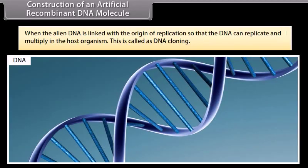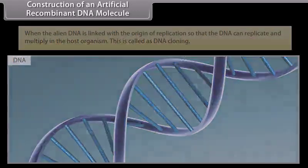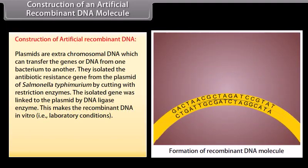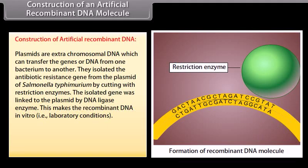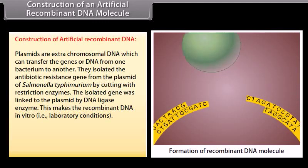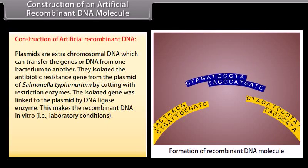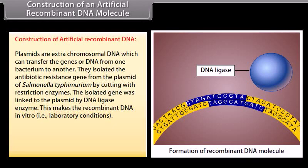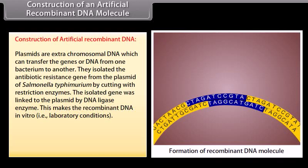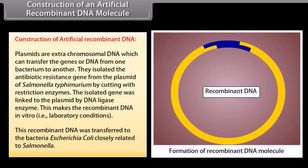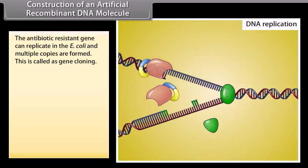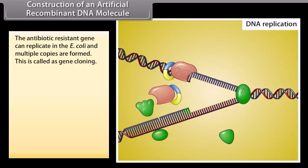Construction of an artificial recombinant DNA molecule. When the alien DNA is linked with the origin of replication, so that the DNA can replicate and multiply in the host organism, this is called DNA cloning. Plasmids are extra-chromosomal DNA which can transfer the genes or DNA from one bacterium to another. They isolate the antibiotic resistance gene from the plasmid of Salmonella typhimurium by cutting with restriction enzymes. The isolated gene was linked to the plasmid by DNA ligase enzyme. This makes the recombinant DNA in vitro. This recombinant DNA was transferred to the bacteria Escherichia coli, closely related to Salmonella. The antibiotic resistance gene can replicate in E. coli and multiple copies are formed. This is called gene cloning.